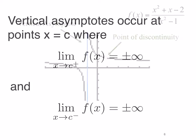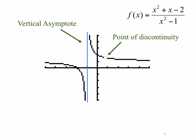Here's a graph of the function f(x) equals x squared plus x minus 2 divided by x squared minus 1. Notice that there's certainly a vertical asymptote at x equals minus 1, represented by the blue line. As you approach minus 1 from the left, the graph goes to minus infinity, and as you approach minus 1 from the right, the graph shoots up to plus infinity. So it satisfies our definition of a vertical asymptote perfectly at x equals minus 1.